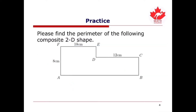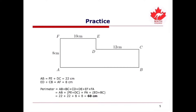Please find the perimeter of the following composite 2D shape. While there is not a strict formula for composite shapes, remember that the perimeter is simply the distance around the shape. We see that AB equals length FE plus length DC, which is 22 centimeters. We can also see that length ED plus length CB equals length AF, which is 8 centimeters. Adding all sides gives a perimeter of 60 centimeters.